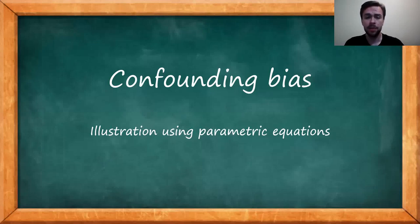Hello everyone and welcome to another video. In this video I would like to discuss the concept of confounding bias, which is widely discussed in epidemiology, but through a different perspective, using parametric equations. For those of you who don't know, parametric equations are a tool frequently used in calculus and my idea here is to try to mix epidemiology and calculus to see what sort of additional insights we can gain on our understanding of confounding.